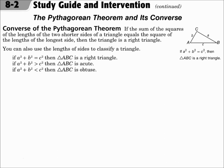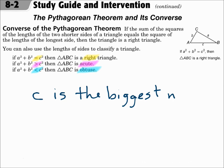The converse of the Pythagorean Theorem says that if the sum of the squares of the lengths of the two shorter sides of a triangle equals the square of the length of the longest side, then it's a right triangle. Before we said if it's a right triangle, then the Pythagorean Theorem works. Now we're saying the converse: if the Pythagorean Theorem works, then it's a right triangle. You can also notice that if a squared plus b squared equals c squared, it's a right triangle; if a squared plus b squared is greater than c squared, it's acute; and if a squared plus b squared is less than c squared, then it's obtuse. When you test it this way, just remember that c is going to be the biggest side, so it will be the biggest number in the formula.